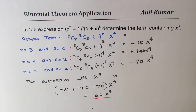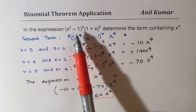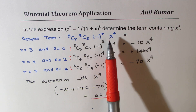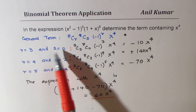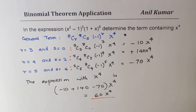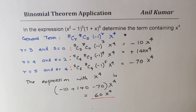The key steps are: find the general term as a product of the two binomials, equate the exponent to 4, find all possible combinations of r and s, and add all the terms with x^4 to get the answer. I'll take up another example to show this process once again. Thanks for watching and all the best.